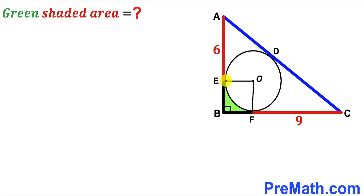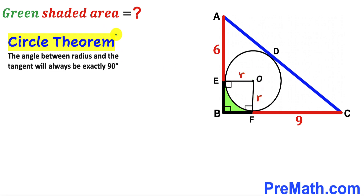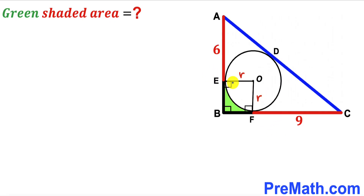Now let's make an observation. OE is the radius of the circle, labeled lowercase r, and OF is the radius as well, also labeled lowercase r. Recalling the circle theorem: the angle between the radius and the tangent line is always exactly 90 degrees. So both of these angles are 90 degrees, and as a result we end up with square EBFO.